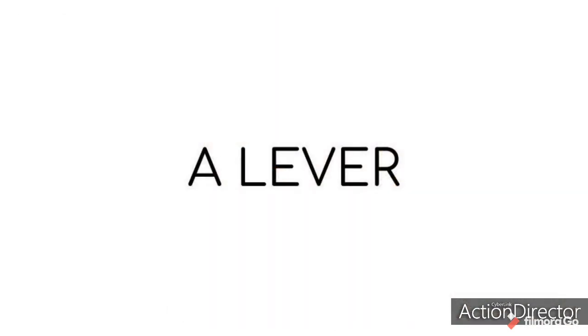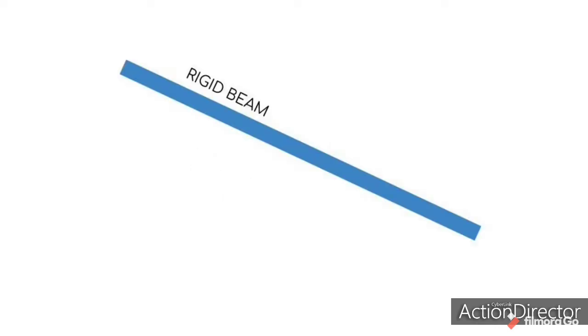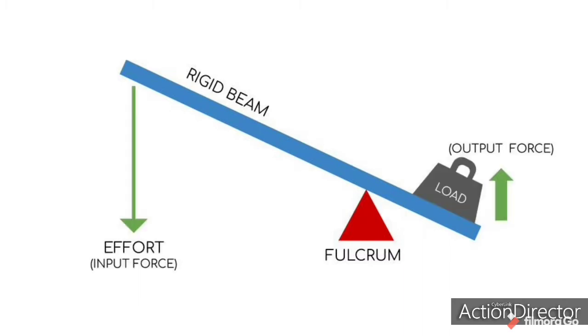Our lesson today is about a lever. This is a simple machine made of a rigid beam and a fulcrum. The effort (input force) and load (output force) are applied to either end of the beam. The fulcrum is the point on which the beam pivots.